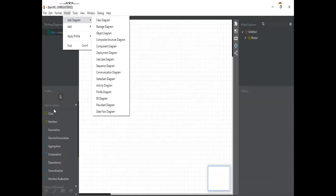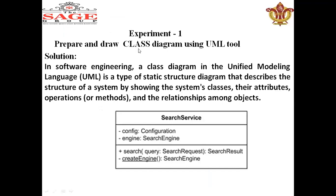I have clicked on the class diagram. You can see class, interface, association, directed aggregation — these are the components of the class diagram, and with the help of these components you can make a class diagram. The first experiment is to prepare and draw a class diagram using UML. A class diagram is a UML diagram — it is a static structure diagram which describes the structure of a system, showing the system's classes, their attributes, and operations.